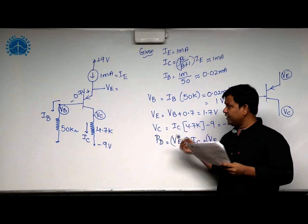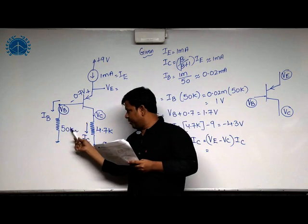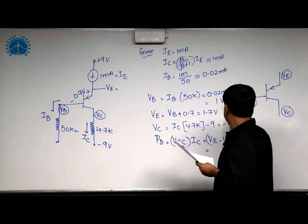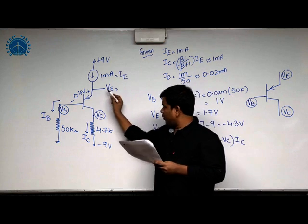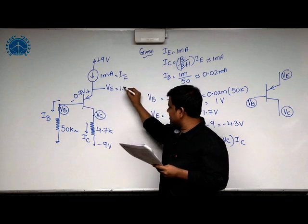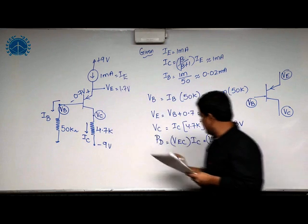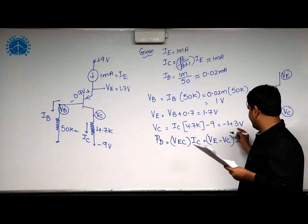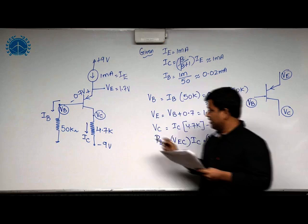Let us calculate the voltages now. Vb is Ib into 50k which is around 1 volt, then what is Ve? It is 1 plus 0.7, this is 1.7 volt. And Vc equal to Ic into 4.7k minus 9 which is minus 4.3.